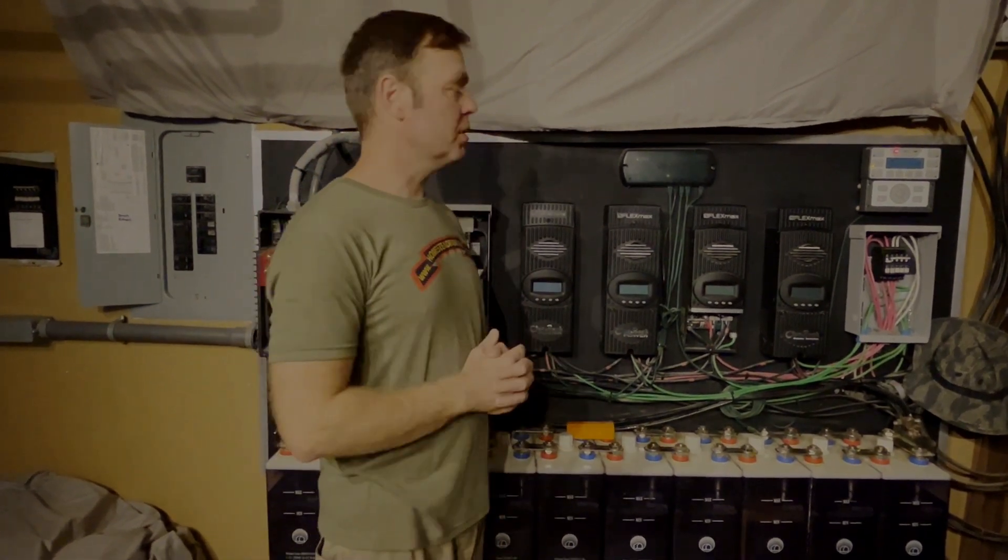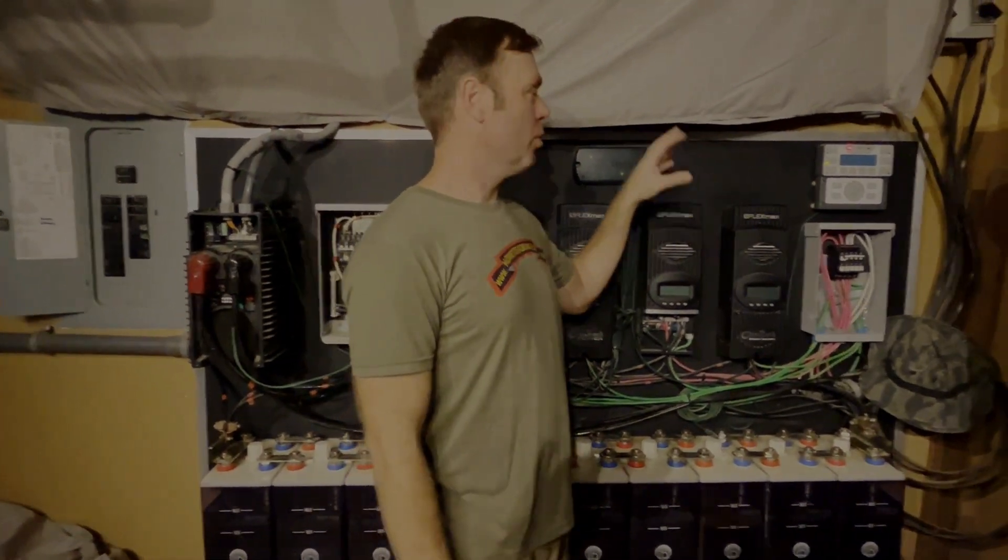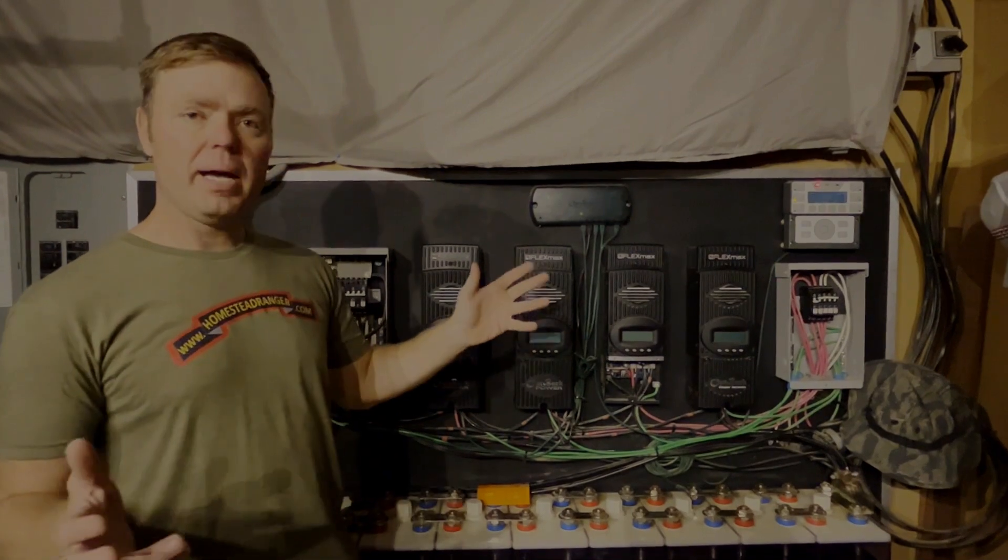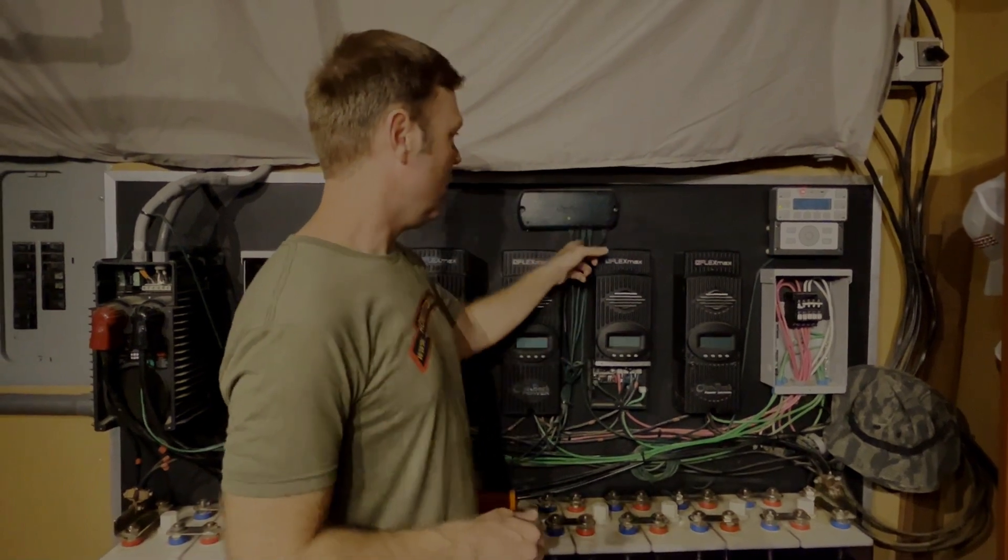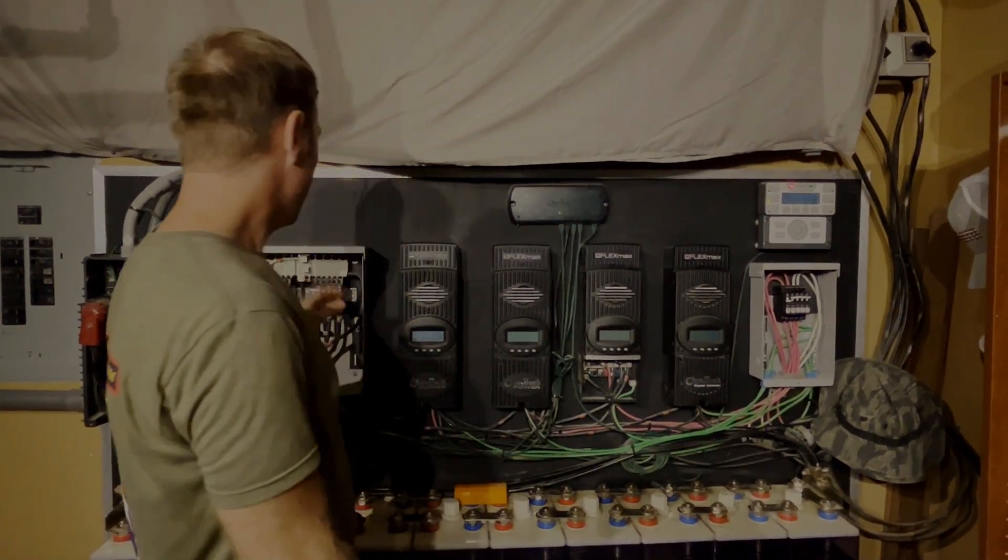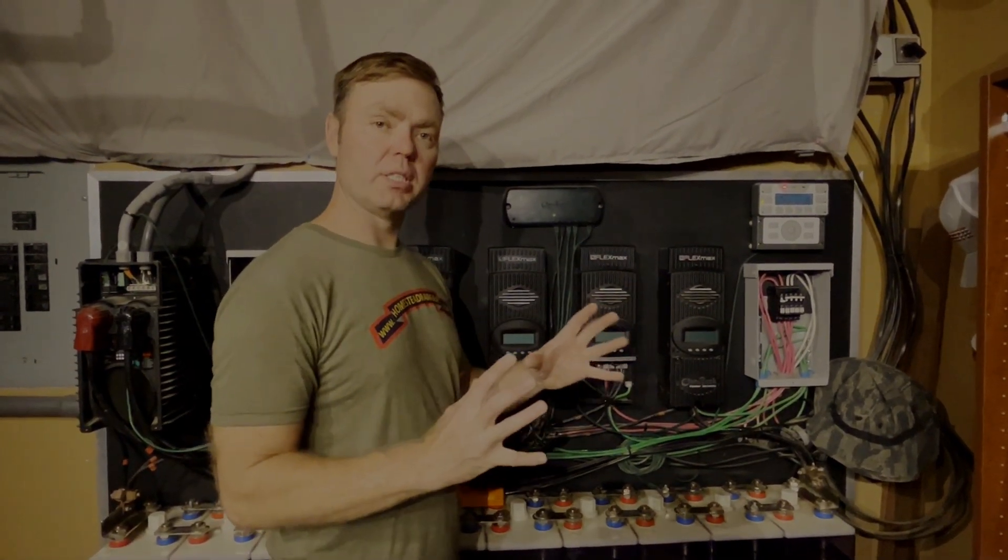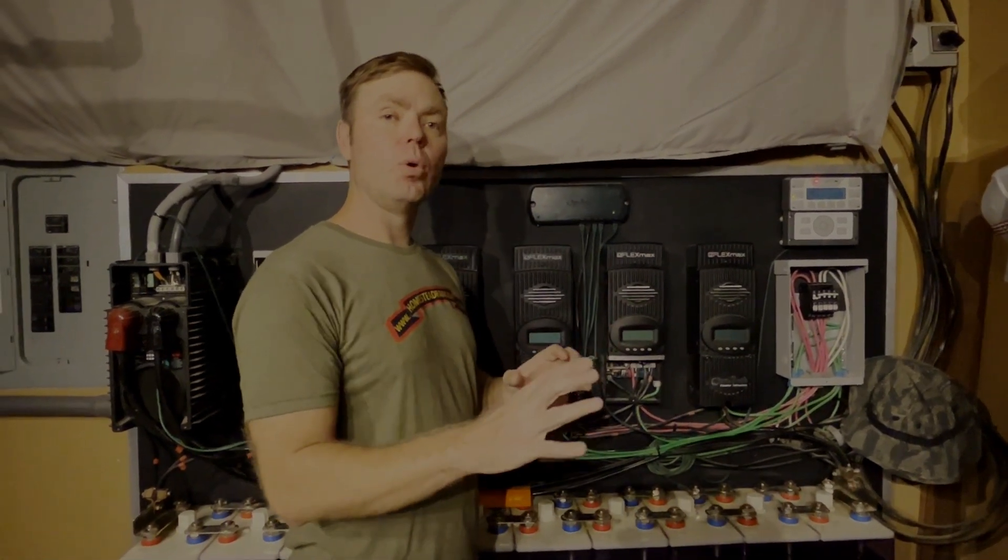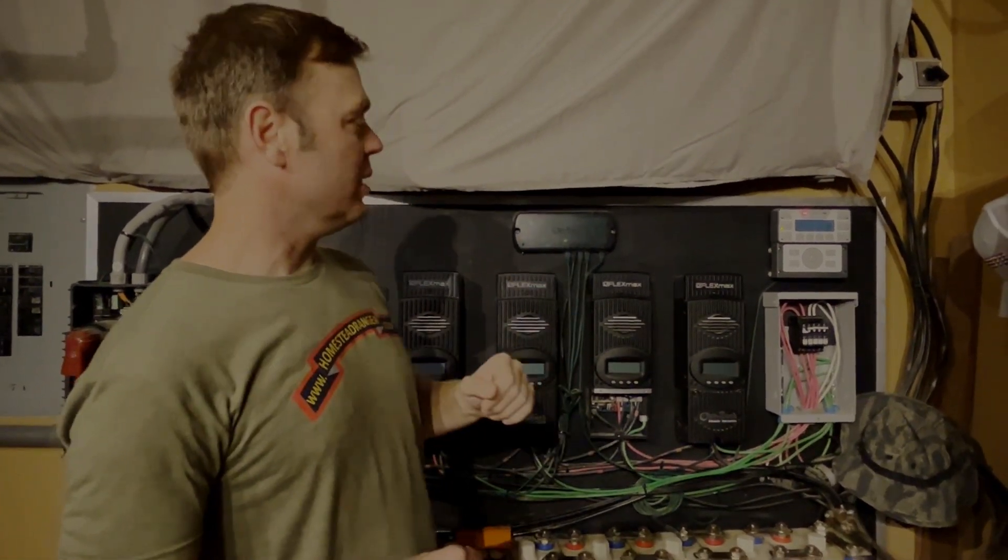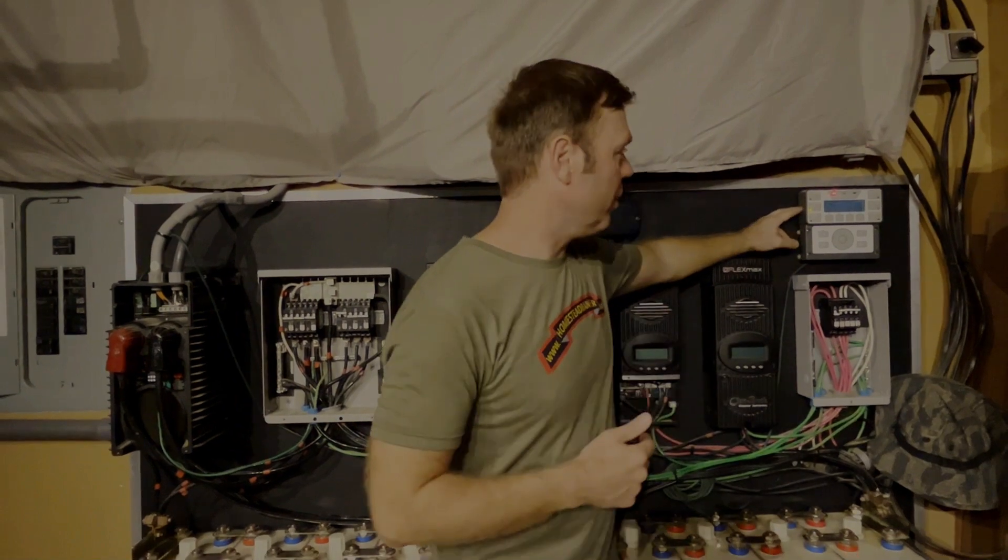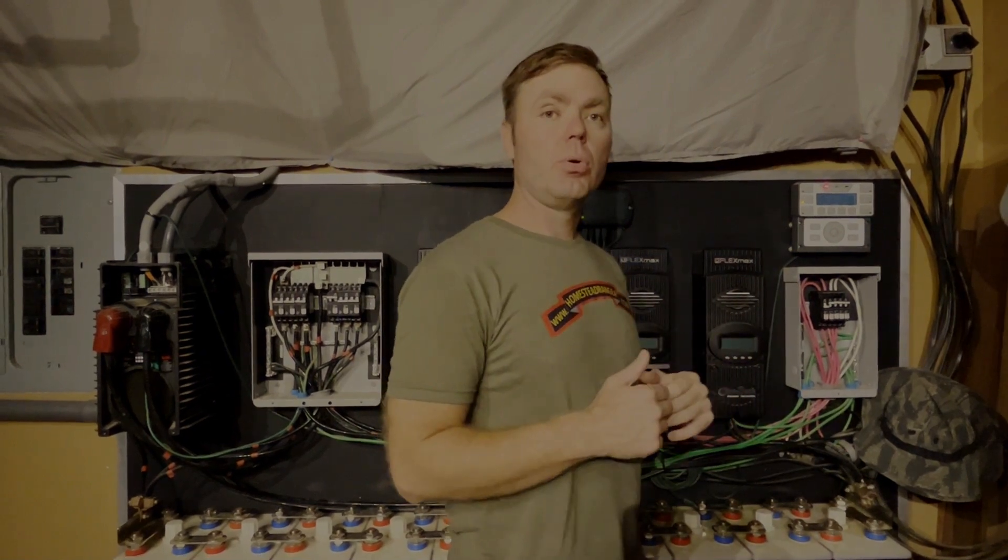There's one other thing left to talk about within this power center, and that is your hub and your mate. All my equipment here is Outback equipment, which I really like. You have a hub, and your hub has a LAN cable that goes to each charge controller and goes to your inverter. It communicates between them so that your charge controllers can work together, and they can give the proper amount of voltage and amperage to your batteries to charge them at the proper rate. Your hub also has a LAN cable that goes over here to your mate. This is a mate 3, and the mate 3 allows you to set all of your charging parameters for all of your charge controllers at the same time.